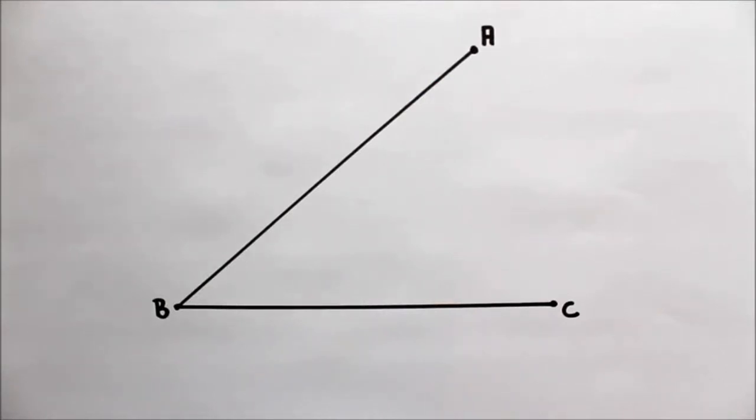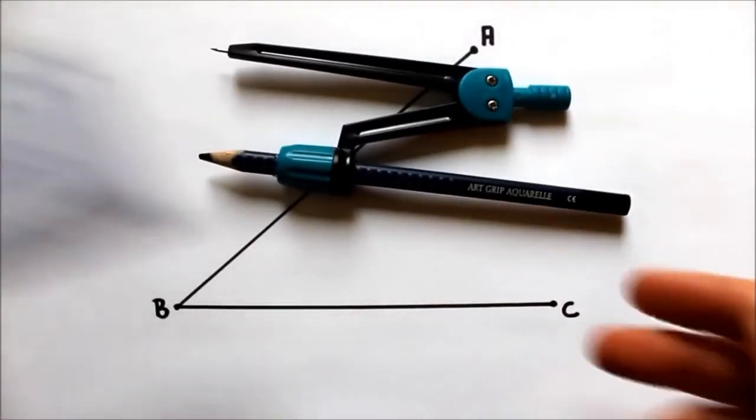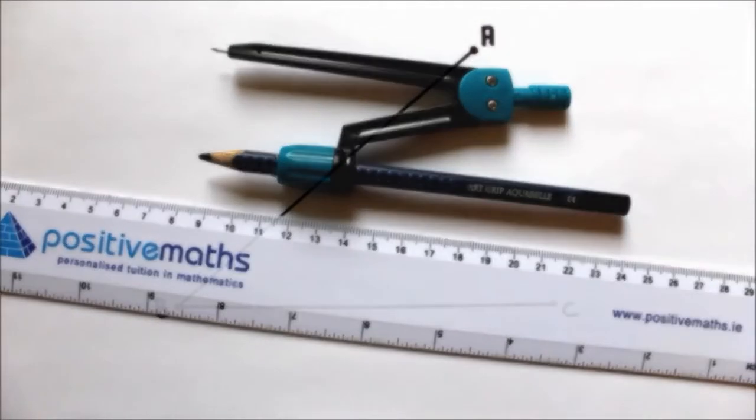So we're given the angle ABC, we need to construct the bisector of this angle using our compass and a straight edge.